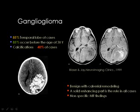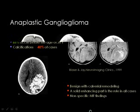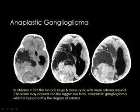Ganglioglioma is characterized by the presence of calcium in most tumors. It can be difficult to discriminate from oligodendroglioma, especially in adolescents or older patients — a calcified lesion in the cerebral parenchyma should be diagnosed as oligodendroglioma until proved otherwise. Anaplastic ganglioglioma can be suspected when you see a large tumor in the pediatric age group, especially below age 10, with a large cystic component and extensive peritumoral edema. It is the malignant form of the more benign ganglioglioma.